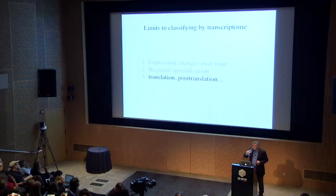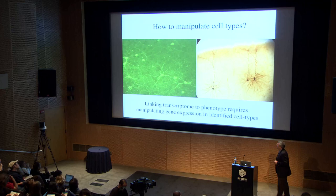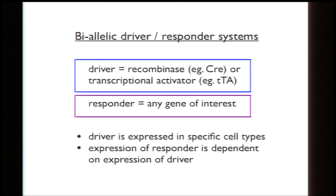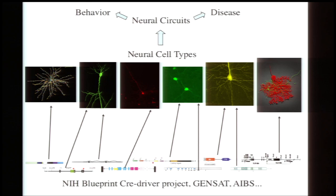I want to turn to a genetic strategy for identifying cell types. Common to all genetic strategies you've heard about is the idea of separate driver and responder alleles: a driver molecule like Cre recombinase or TET activator protein is selectively expressed in one set of cell types and can be used to alter expression of any gene by delivering a responder allele virally or genetically. Almost all existing examples — including the Cre driver project and the GENSAT project — are based on finding specific promoters active in specific cell types to provide genetic access.